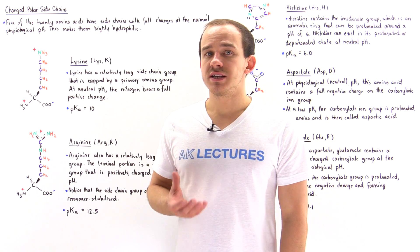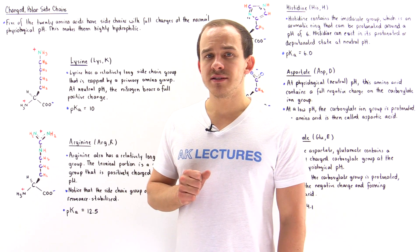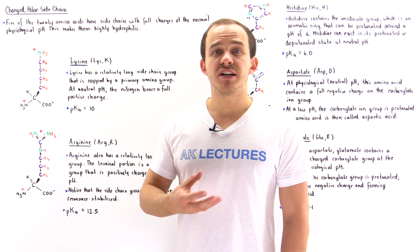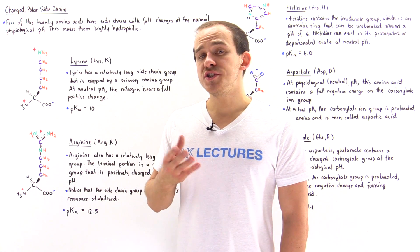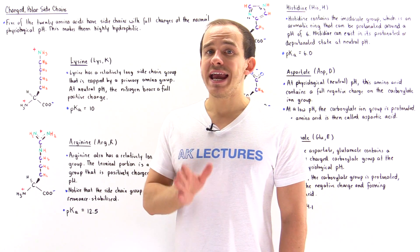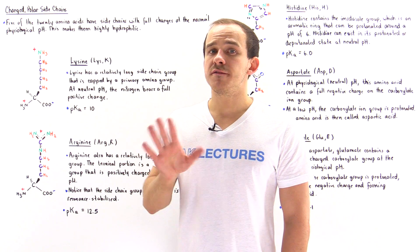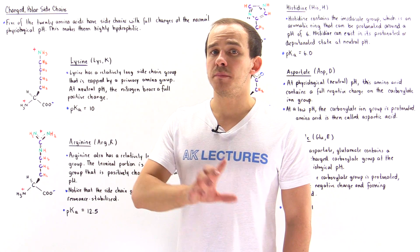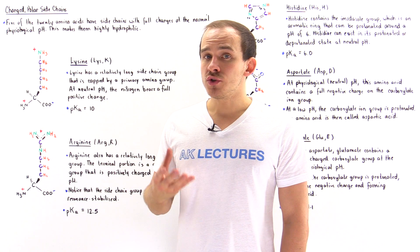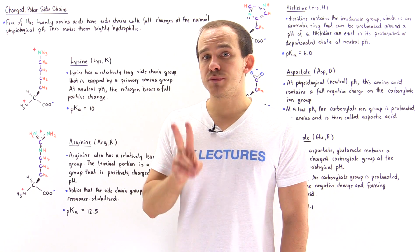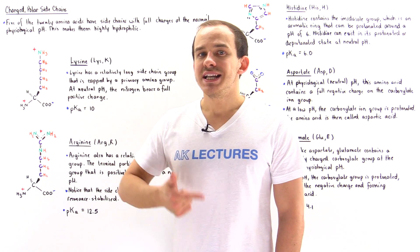Previously, we discussed 15 of the 20 amino acids that make up the proteins found in the human body. We spoke about the 8 hydrophobic amino acids, the 5 polar but uncharged amino acids, and we also discussed the two special cases, proline and glycine.